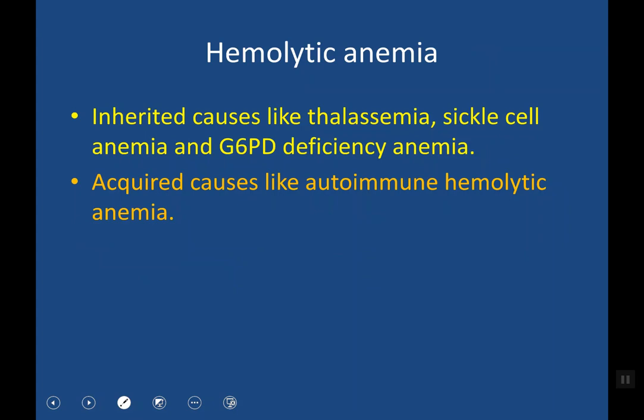The third major type of anemia is hemolytic anemia. This might result from inherited causes, for example thalassemia, hereditary spherocytosis, sickle cell anemia, hereditary elliptocytosis, or G6PD deficiency. In inherited hemolytic anemia, there is usually a long history of anemia since early childhood and a positive family history. Acquired hemolytic anemia — called autoimmune hemolytic anemia — can occur at any age, and may be primary (idiopathic) or secondary to certain infections or hematological disorders like chronic lymphocytic leukemia.